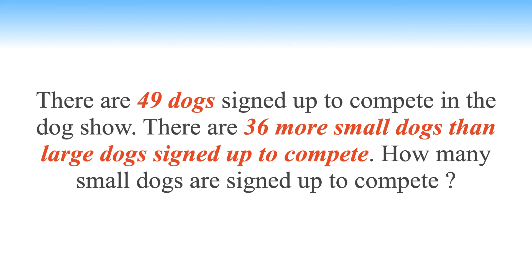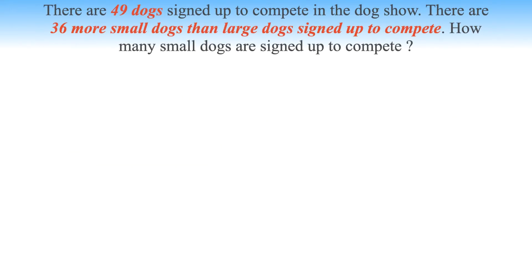The real answer is 42.5, 42 and a half dogs. Somehow even with the correct answer we are still scratching our heads. A half dog? Here is why: 49 minus 36 is 13. 13 divided by 2 is 6.5, so 36 plus 6.5 is equal to 42.5.